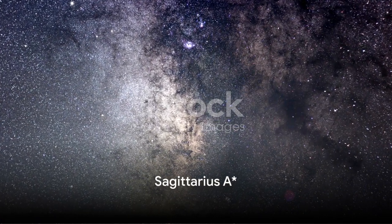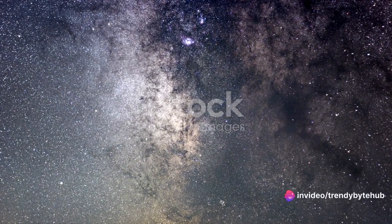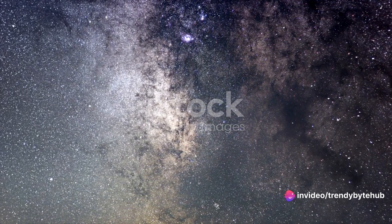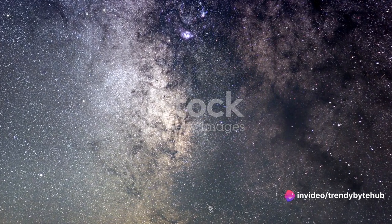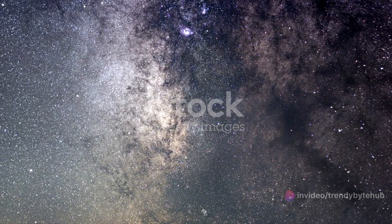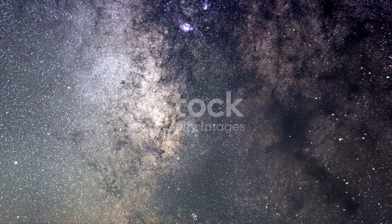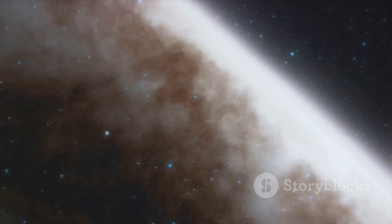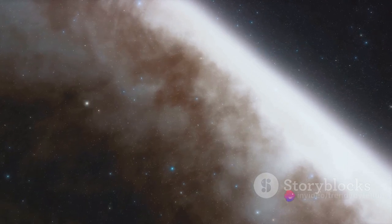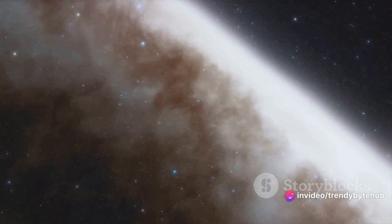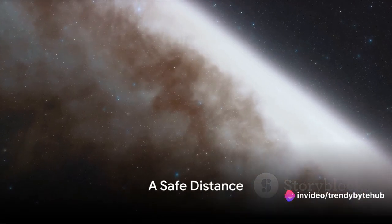a supermassive black hole known as Sagittarius A asterisk. This celestial beast is not your average black hole. It's supermassive, tipping the cosmic scales at about 4 million times the mass of our sun. It sits at the very center of our galaxy, about 26,000 light years away from Earth. But don't worry, we're in no danger of getting sucked in.